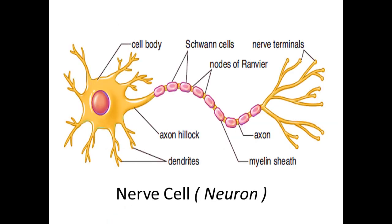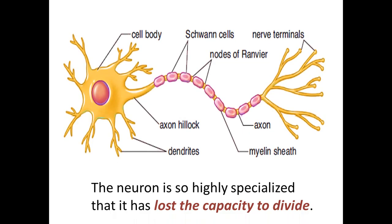Here is a typical neuron, or nerve cell, which consists of several parts including a specialized part known as the axon hillock. An interesting fact about neurons is that they never divide. They are so highly specialized that they have lost the capacity to divide, remaining in the G0 phase of the cell cycle. Once they are specialized, they never perform mitosis or meiosis.